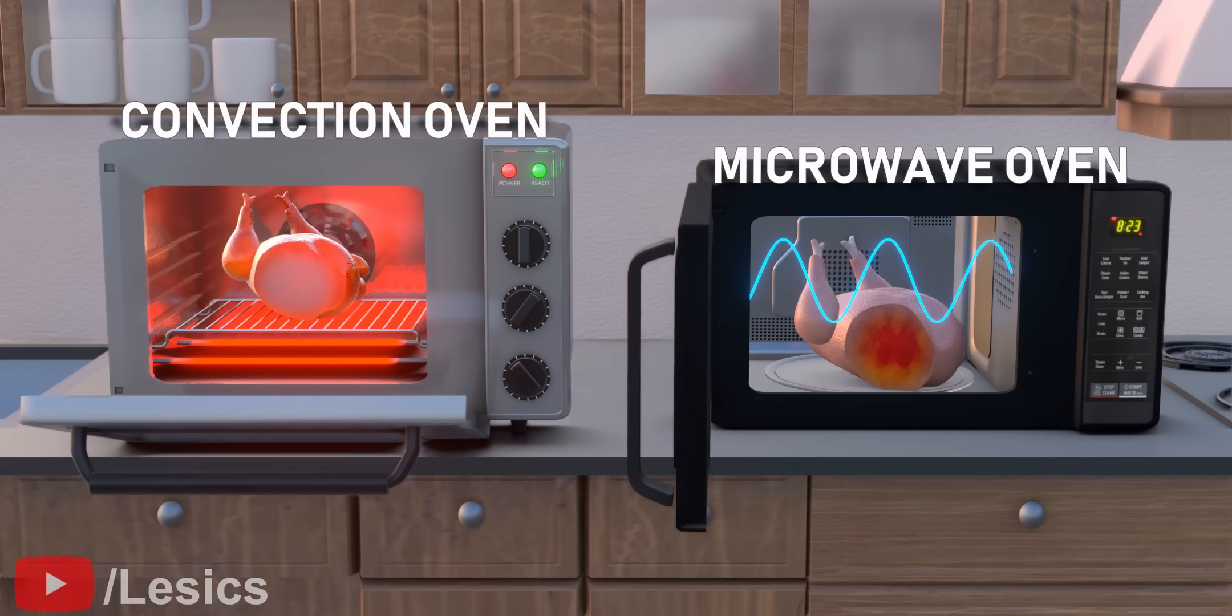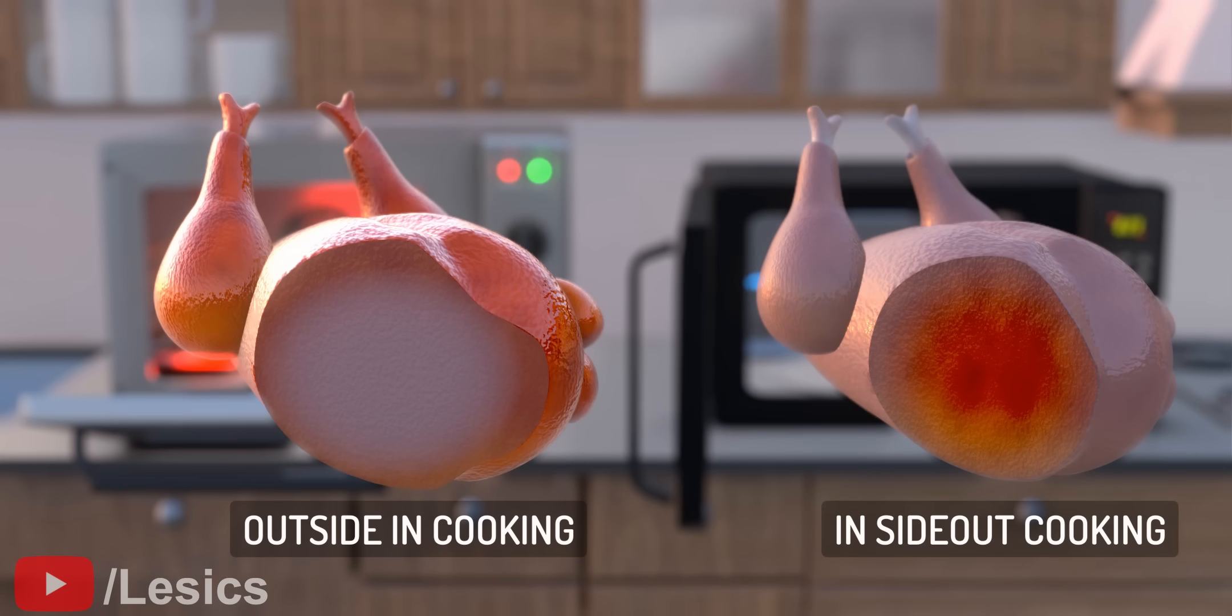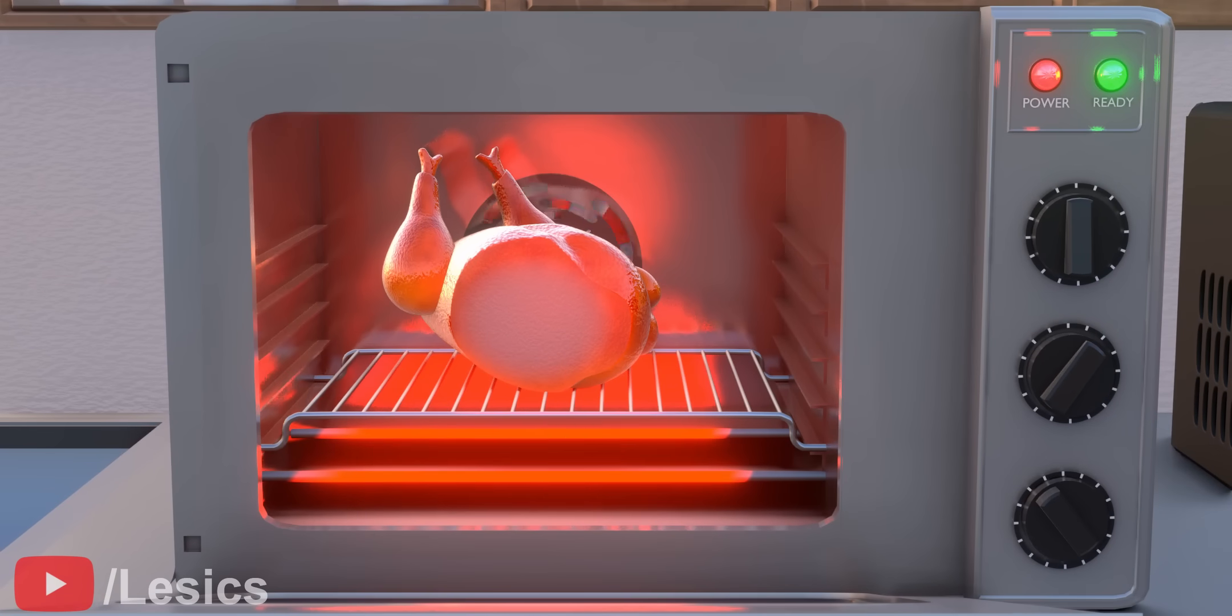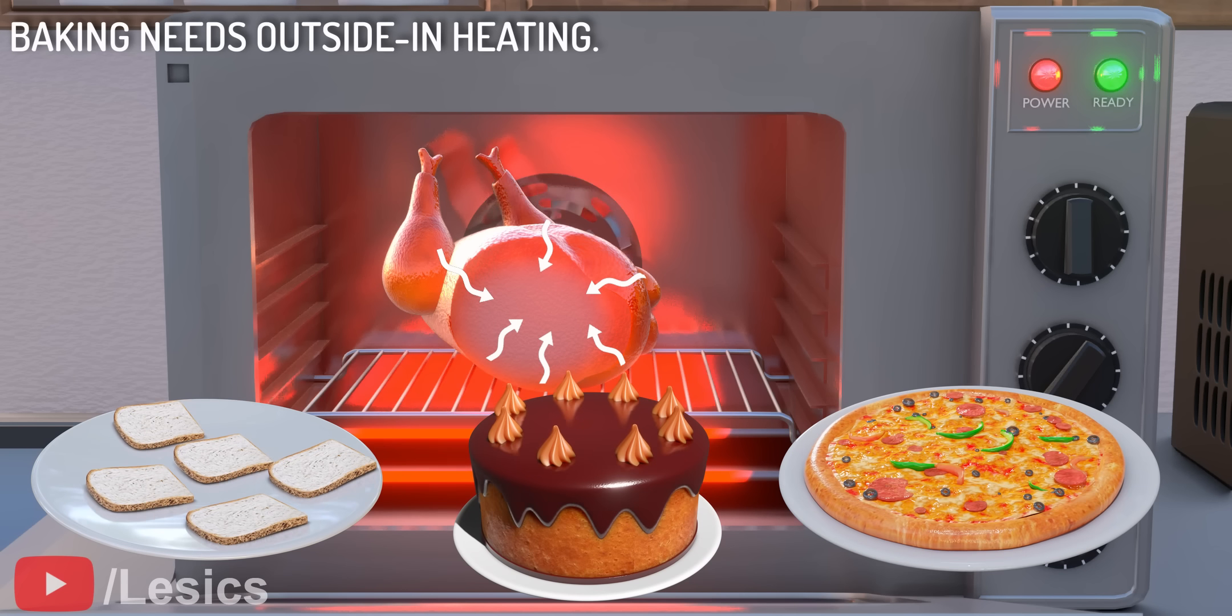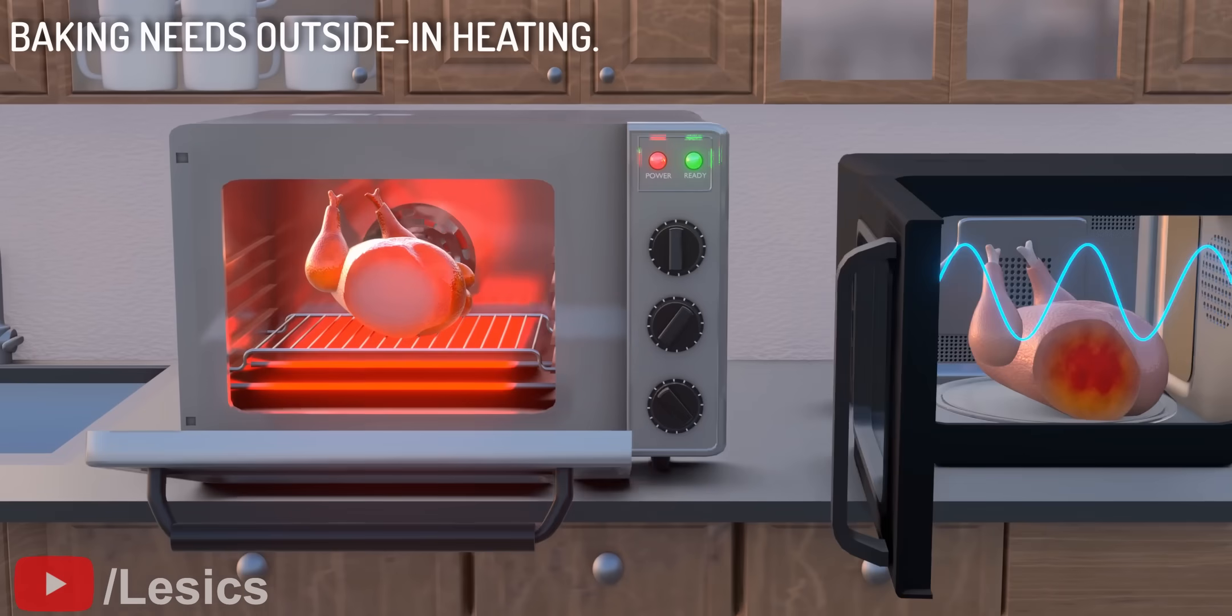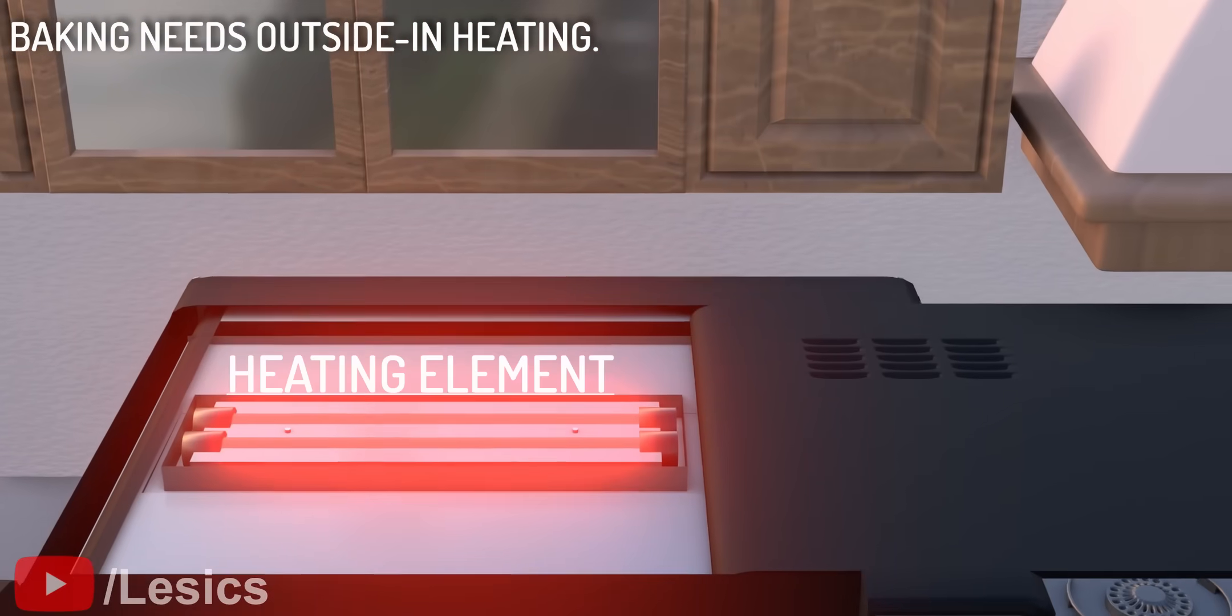The convection method cooks food from the outside in as opposed to the inside out. This is because the heat energy has to travel from outside to inside. But this method can be useful on some occasions. When you need food with a crisp surface and a soft interior or baking, the convection heating method is preferred. Due to this reason, modern microwave ovens come with a convection option for baking purposes.